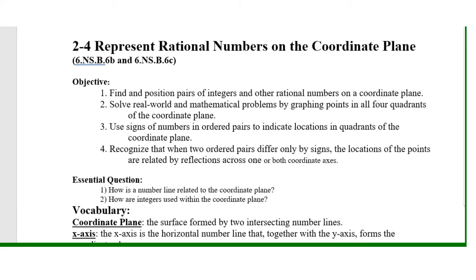We are moving on to a new topic: 2-1, representing rational numbers on the coordinate plane. Remember, a rational number is a number that you can write as a fraction. This is page 54 in your guided notebook — make sure you are on page 54. We have some objectives to master: find positions of pairs of integers and other rational numbers on a coordinate plane, and solve real-world and mathematical problems by graphing points in all four quadrants.